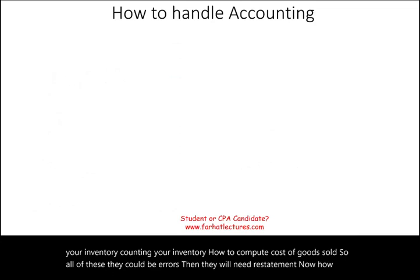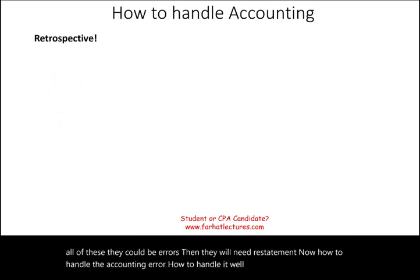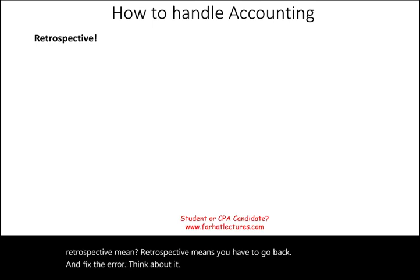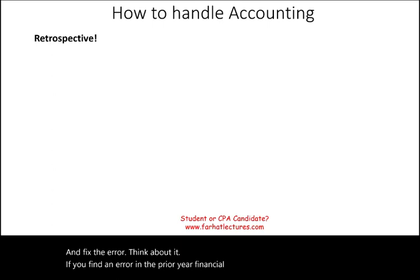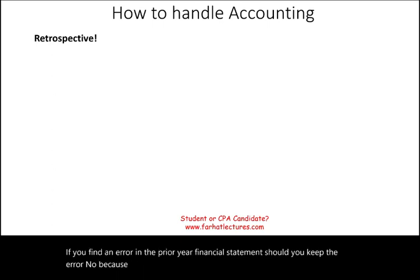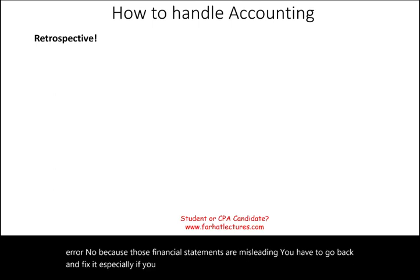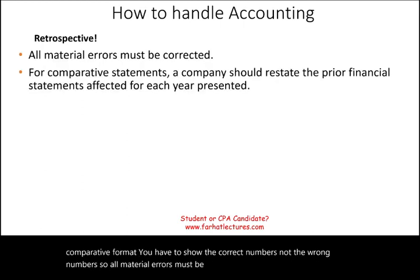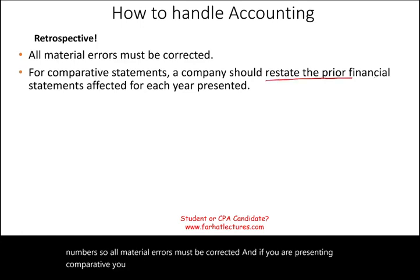How do you handle an accounting error? Simply put, you handle it retrospectively. Retrospective means you have to go back and fix the error. If you find an error in a prior year financial statement, you cannot keep it because those statements are misleading. All material errors must be corrected. If you are presenting financial statements in a comparative format, you must restate the prior financial statements affected for each year presented.